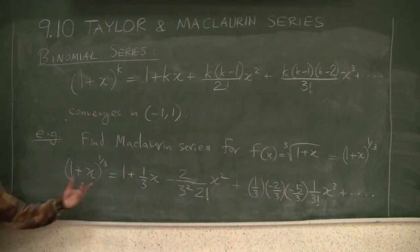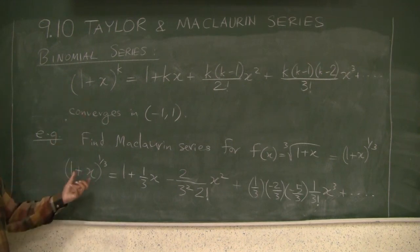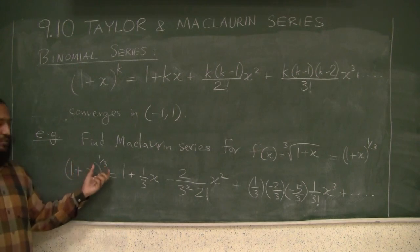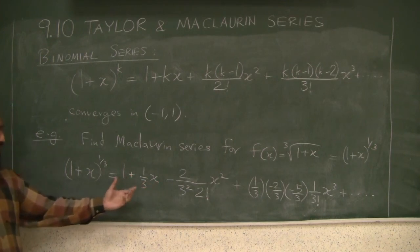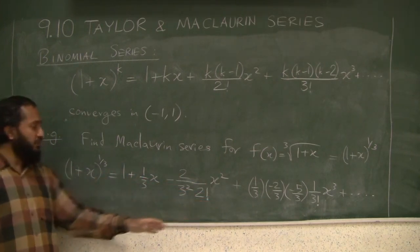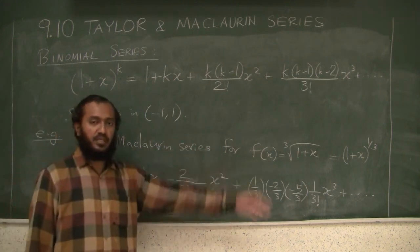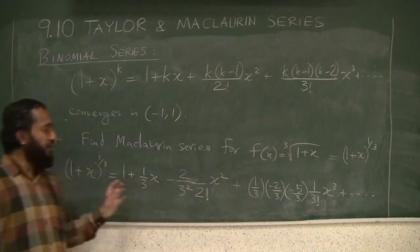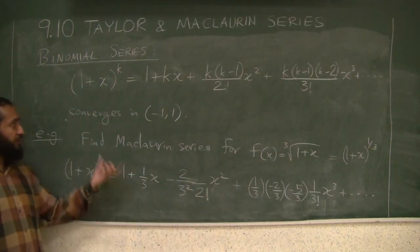This is very nice because once we know the binomial series, we can compute cube roots and 7th roots and 2 over 7th powers and things like that by very simple polynomial-type things. For a desired degree of accuracy, we will stop at some place like x cubed or x to the 4 and evaluate them.